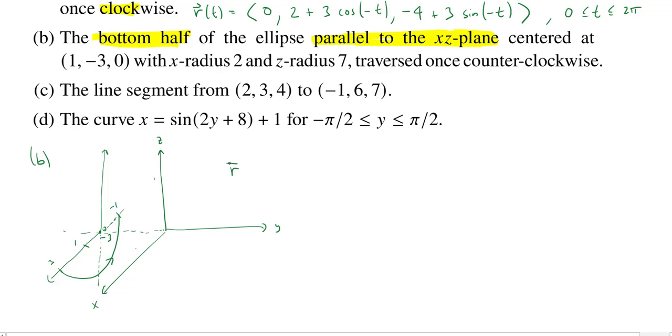So let's try to parametrize this thing. Since this is going to be parallel to the XZ plane, we're only going to have things really in the X and the Z components. The Y component will just be a constant. In fact, we can see it'll be -3. So we can put a -3 in the middle.